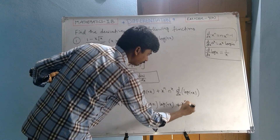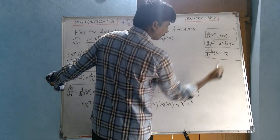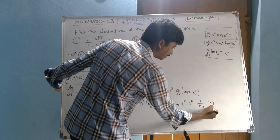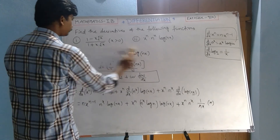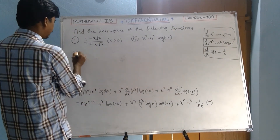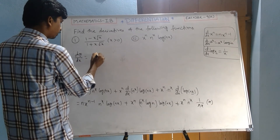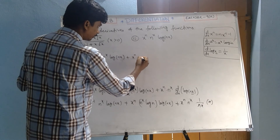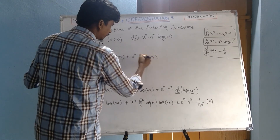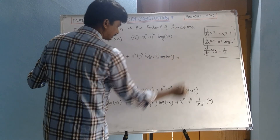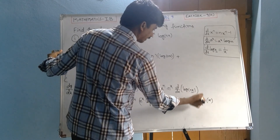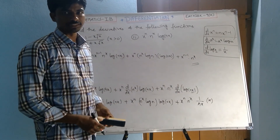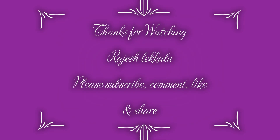And d/dx of log nx equals 1 by nx times n, so the n's cancel giving 1/x. Therefore dy/dx equals n times x to the power of n minus 1 times n to the power of x times log nx, plus x to the power of n times n to the power of x times log n times log nx, plus x to the power of n minus 1 times n to the power of x. If you have any doubt please comment, please subscribe my channel, like and share. Thank you.